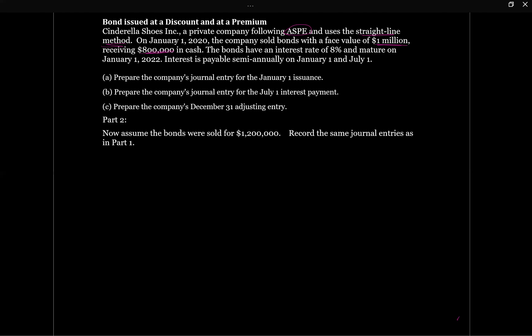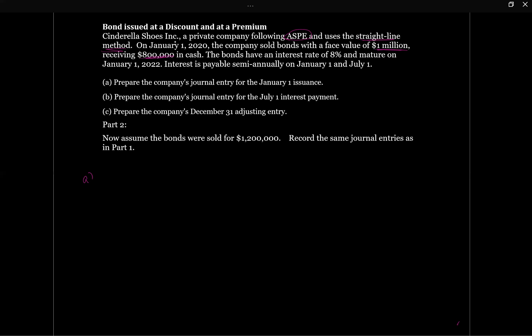The first entry is for the January 1st 2020 issuance. We debit cash and credit bond payable to set up that liability on the statement of financial position. It's a long-term liability because it's not due within the next year — it's due in two years, January 2022. We received $800,000 in cash, while the bond payable is recorded at its face value of $1 million.